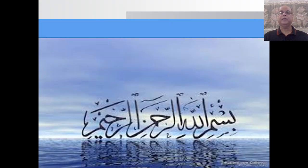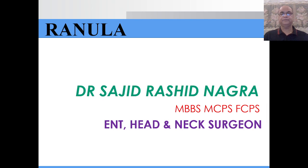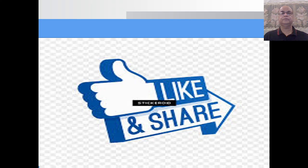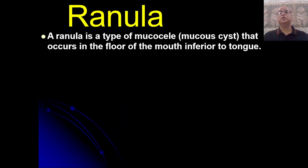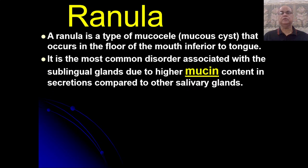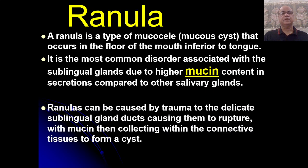The benign tumors of the oral cavity are divided into solid and cystic masses. One of the cystic pathologies we will talk about today is called ranula. It is a type of mucous cyst that occurs in the floor of the mouth below the tongue. It is the most common disorder associated with sublingual gland ducts, which have higher mucin content in their secretions compared to other salivary glands. Ranulas can be caused by trauma to the delicate sublingual gland ducts, causing them to rupture, and then the mucin collects within the connective tissue to form a cyst.